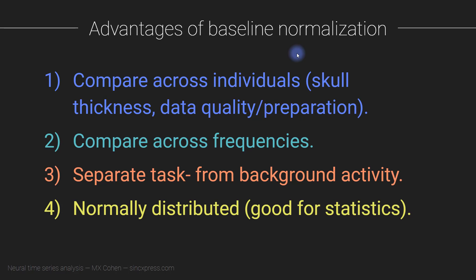Relatedly, imagine you have data from EEG and your colleague has data from MEG and you want to compare results. Microvolts and teslas are just different scales — you can't compare some number of microvolts with some number of picoteslas. However, if you both independently normalize your data to decibels, you can directly compare effect sizes between the EEG and the MEG data. Baseline normalization also allows you to compare across frequencies, because normalization is done per frequency, which gets rid of the one-over-f problem.